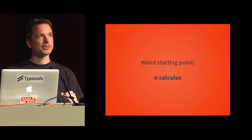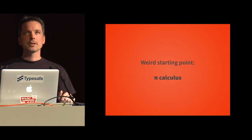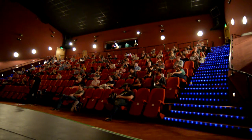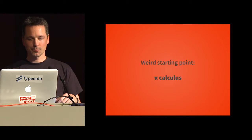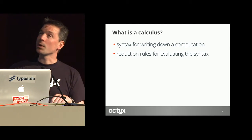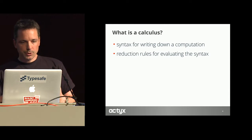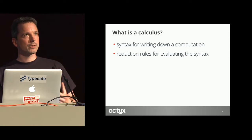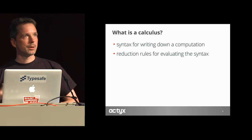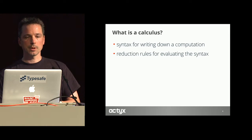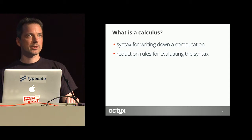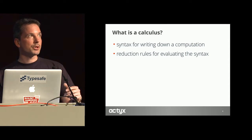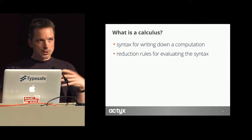We choose a very weird starting point: the pi calculus. Who here is fluent in the pi calculus? I see two hands. So, I should introduce what a calculus is. A calculus is basically two things: first, it is a syntax for writing down computations so they can be understood by other mathematicians or by computers. Second, and very relevant, is how to execute — how to evaluate what you have just described in terms of computation. These are given as reduction rules, and together they define a calculus.